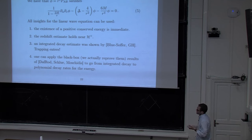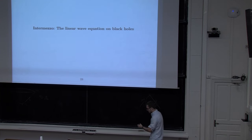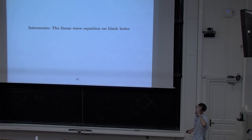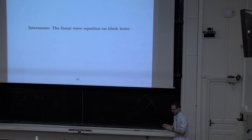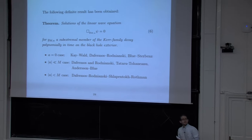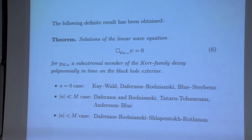Let me spend about ten minutes on what's known for the linear wave equation on black holes, since this is what we need to do for the Regge-Wheeler equation. The statement now obtained after a long period of work by many groups: solutions of the linear wave equation for a sub-extremal member of the Kerr family decay polynomially in time on the black hole exterior. The approach was to first look at the simplest case — angular momentum per unit mass equal to zero — where boundedness was proved by Kay and Wald, and decay by Rodnianski-Blue. Then the slowly rotating case was handled with three independent proofs, and finally last year the full sub-extremal case was covered.